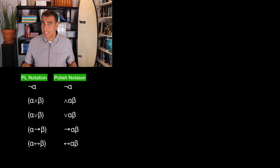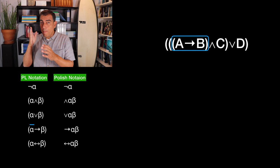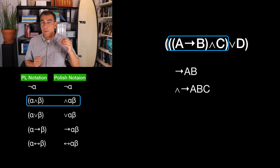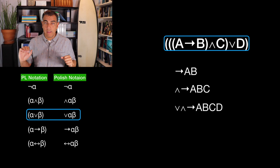Looking at our examples from our last video, if we wanted to write 'if A then B, and C, or D,' first we would write arrow A B for that inner parentheses. We want to use what we just made as the first conjunct of a conjunction. So we write the conjunction sign, then arrow A B, then the second conjunct C. Finally, for our disjunction, we write the disjunction sign, then and arrow A B C, then our second disjunct D.